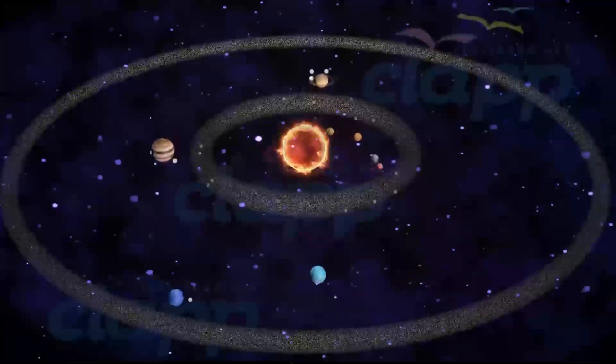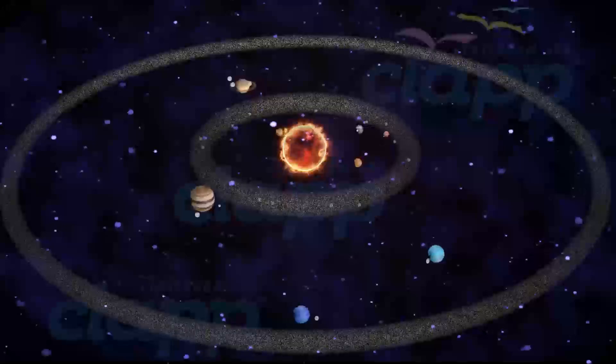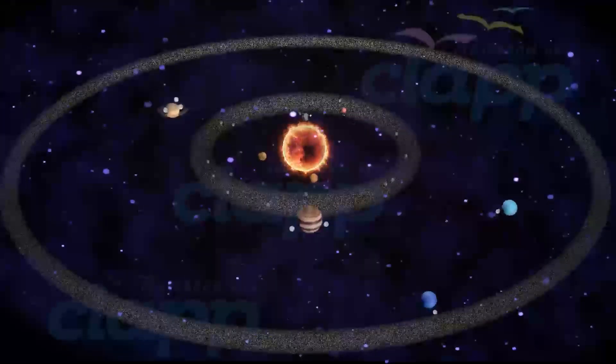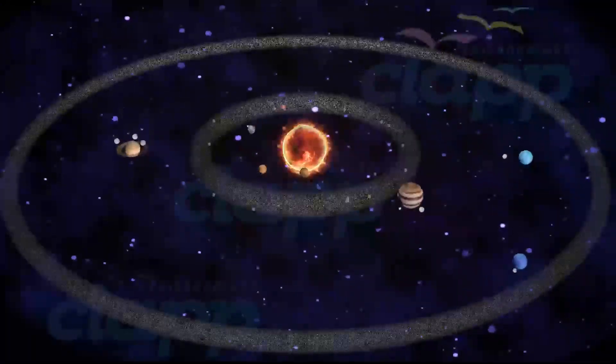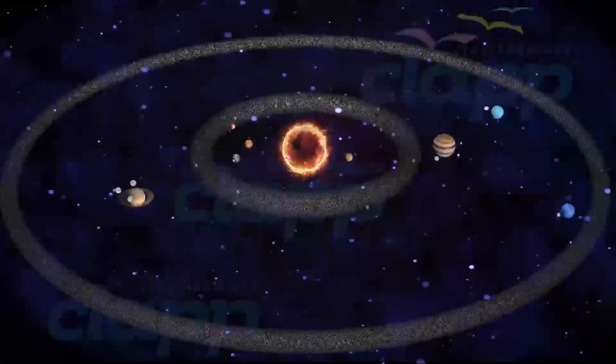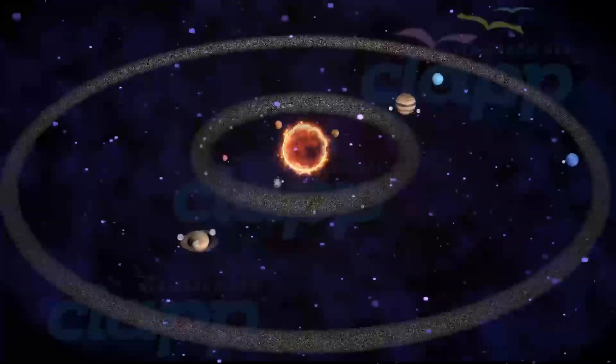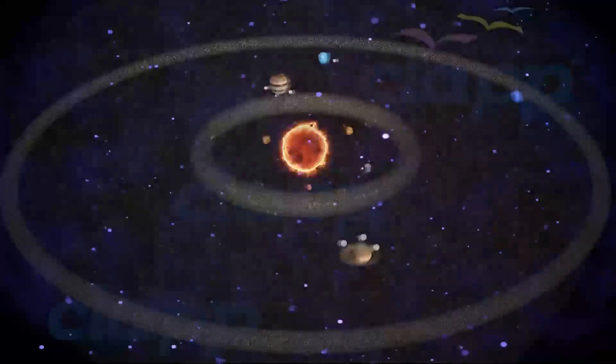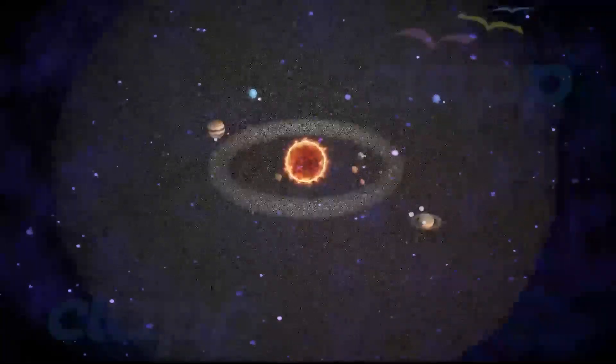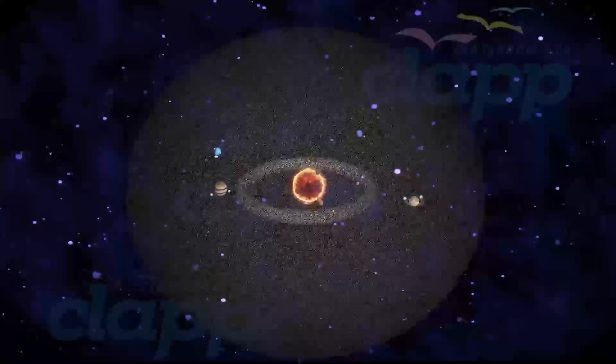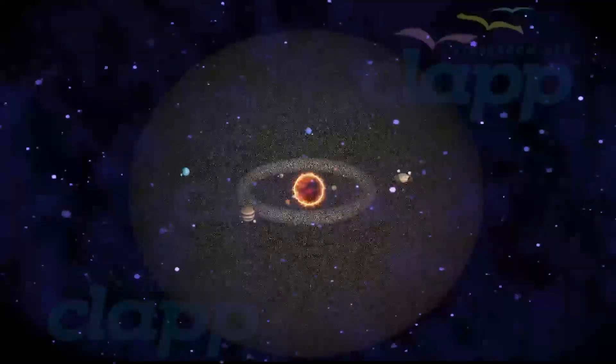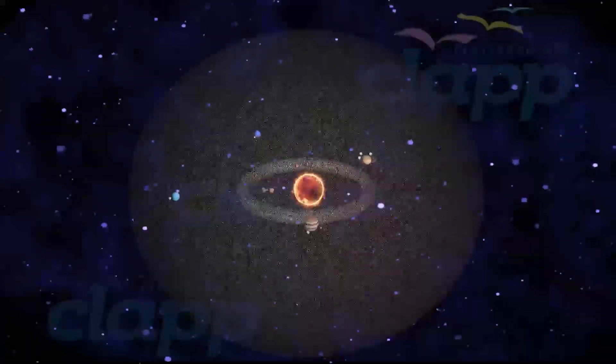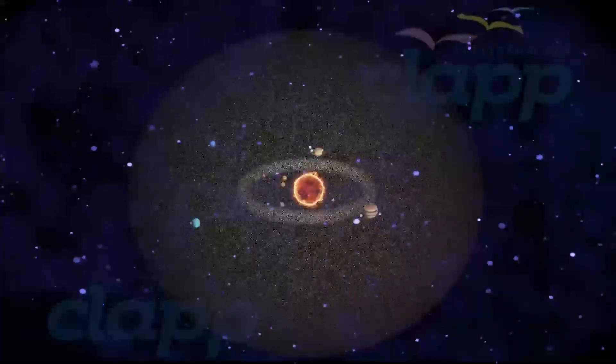The Kuiper belt is considered the border of our solar system, which lies beyond Neptune's orbit, and contains objects composed mostly of ice and rock. The Kuiper belt is spherical in shape. The diameter of our solar system is 287.46 billion kilometers.